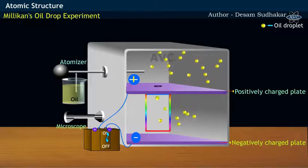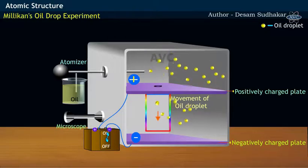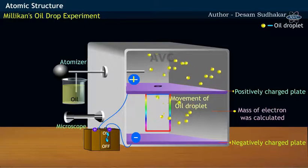By observing the movement of tiny oil droplets, Millikan was able to calculate the mass of an electron.